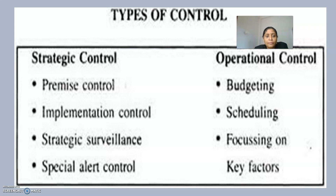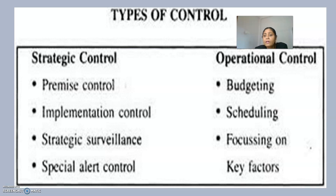At the strategic level, strategic managers control things through methods such as premise control, implementation control, strategic surveillance, and special alert control. With premise control, strategic managers must monitor the factors or premises they considered when formulating the strategy, because changes in those premises could have major effects on the strategy.